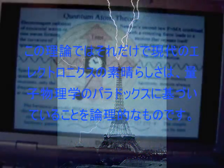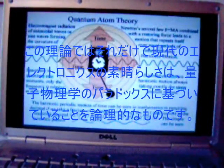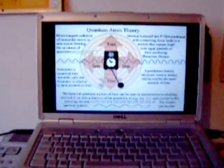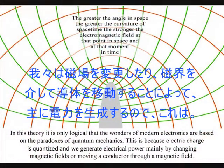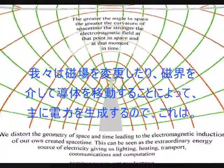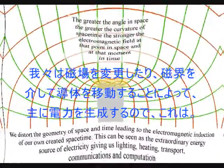In this theory it is only logical that the wonders of modern electronics are based on the paradoxes of quantum mechanics. This is because electric charge is quantized, and we generate electric power mainly by changing magnetic fields, or moving a conductor through a magnetic field.